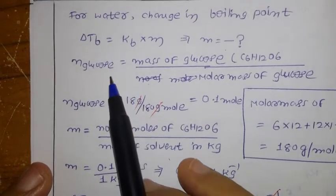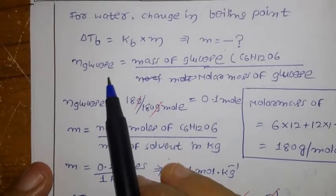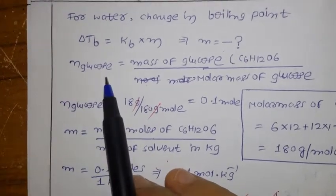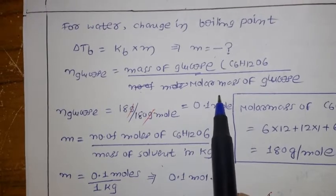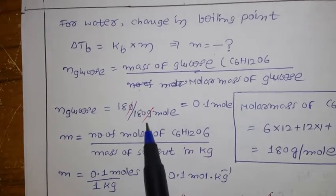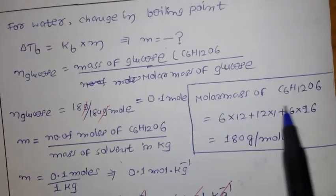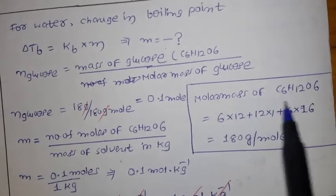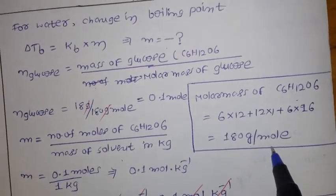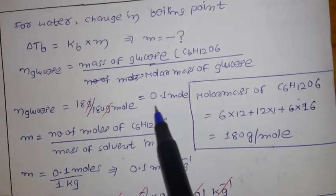The solute is glucose. Number of moles is not given directly, but we can calculate it. Number of moles of glucose = mass of glucose / molar mass of glucose = 18 grams / 180 grams per mole = 0.1 mol.